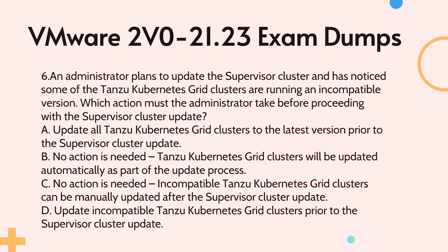Question 6: An administrator plans to update the supervisor cluster and has noticed some of the Tanzu Kubernetes Grid clusters are running an incompatible version. Which action must the administrator take before proceeding with the supervisor cluster update? A. Update all Tanzu Kubernetes Grid clusters to the latest version prior to the supervisor cluster update. B. No action is needed — Tanzu Kubernetes Grid clusters will be updated automatically as part of the update process. C. No action is needed — incompatible Tanzu Kubernetes Grid clusters can be manually updated after the supervisor cluster update. D. Update incompatible Tanzu Kubernetes Grid clusters prior to the supervisor cluster update.